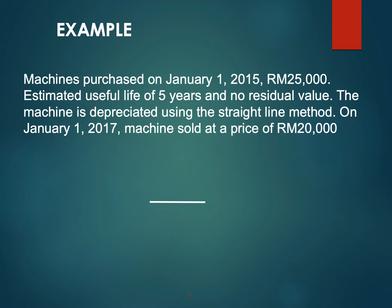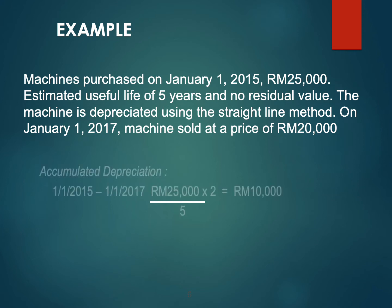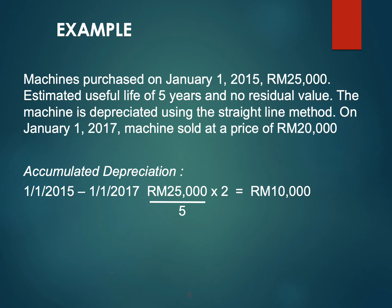For example, a machine purchased on January 1, 2015 for 25,000, with an estimated useful life of 5 years and no residual value. The machine is depreciated using the straight-line method. On January 1, 2017, the machine was sold at a price of 20,000. We have to calculate the accumulated depreciation from when the machine was purchased until it was sold. The cost of 25,000 divided by the useful life of 5 years, times 2 years of usage, gives accumulated depreciation of 10,000.